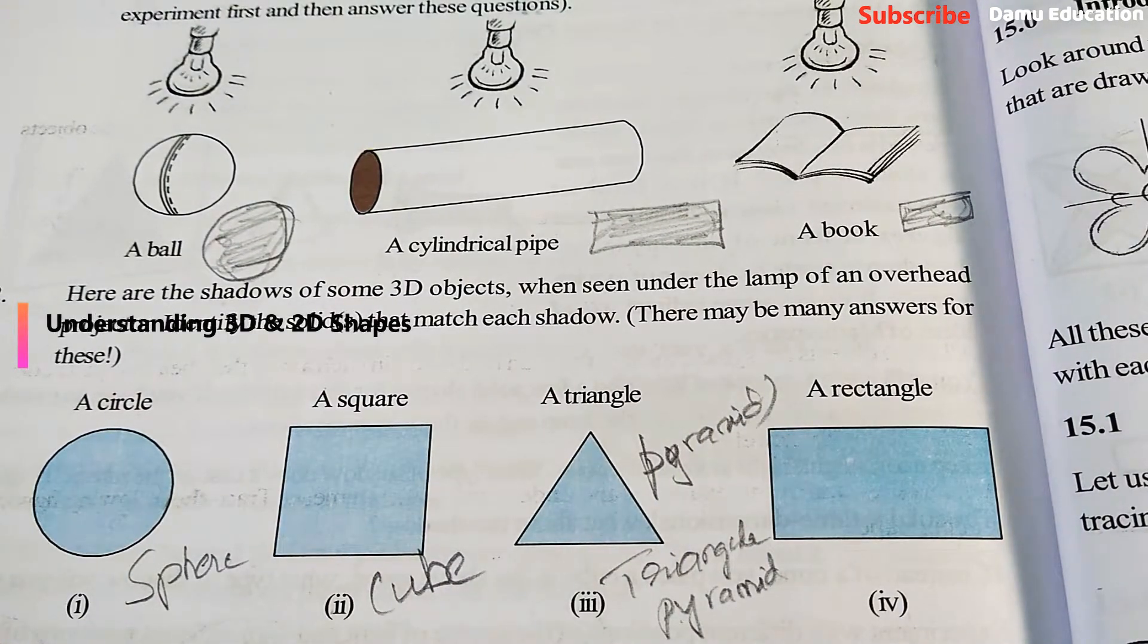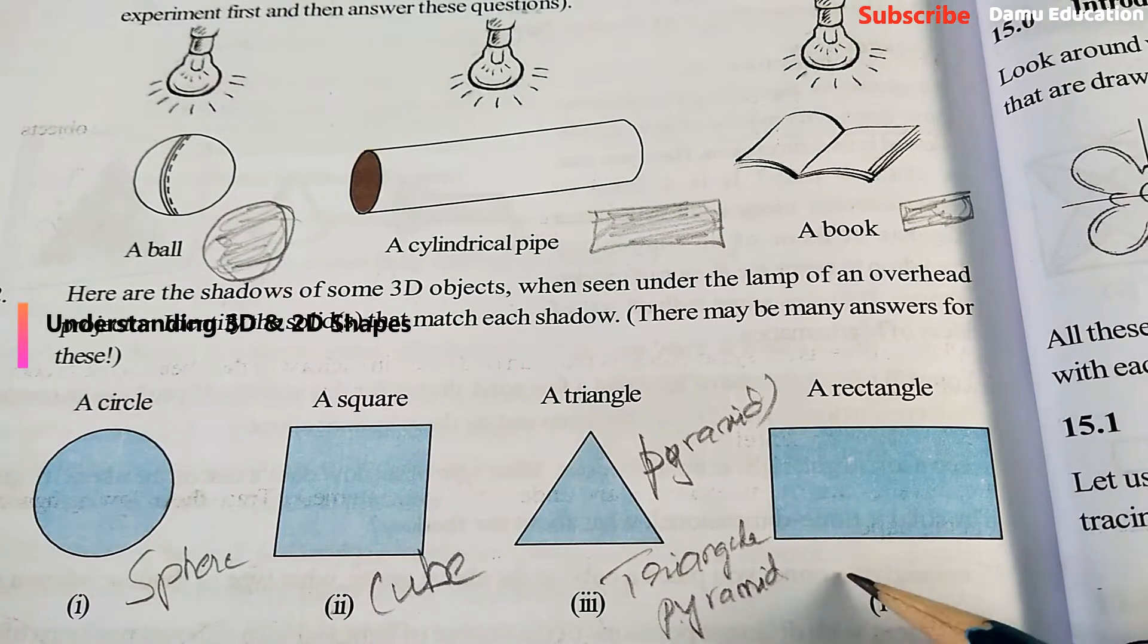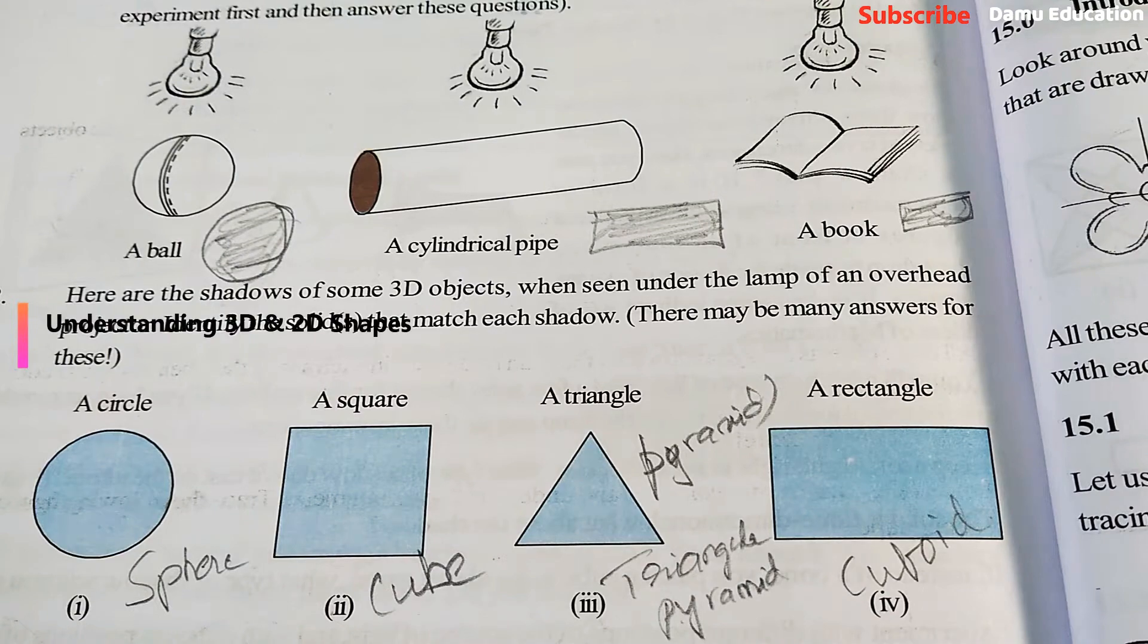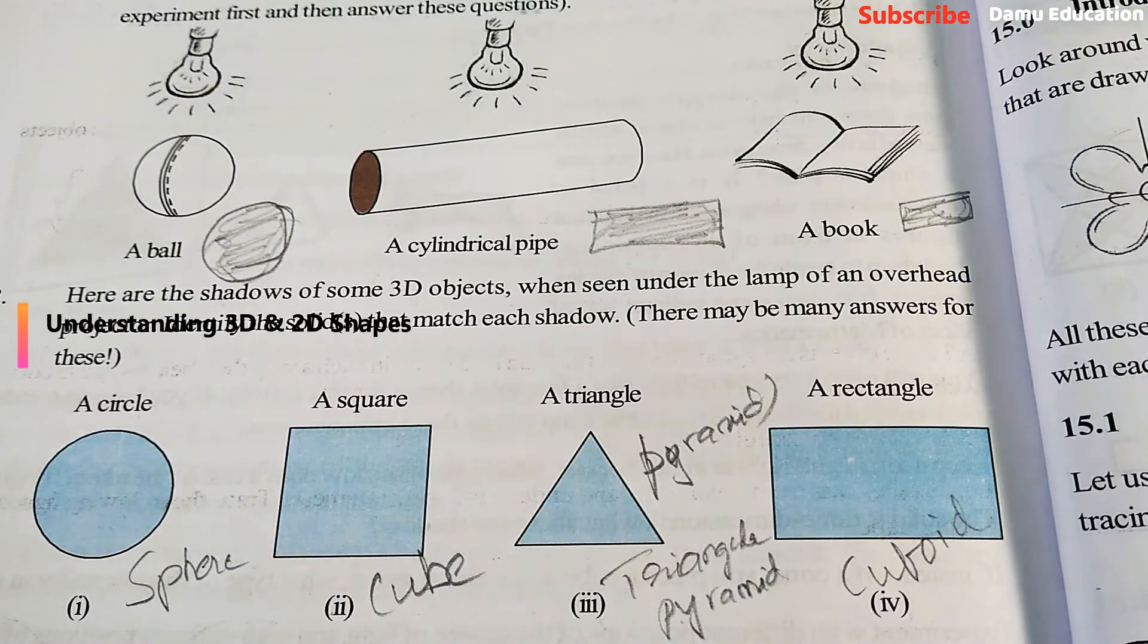Next, rectangle means cuboid. Cuboid shapes will cast rectangular shadows. Thanks for watching this video.